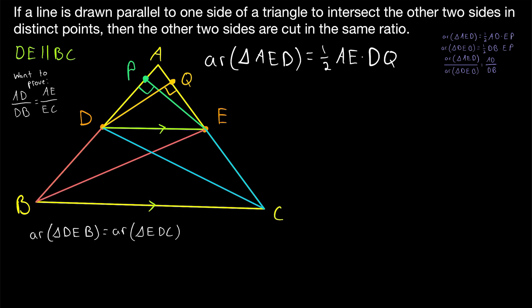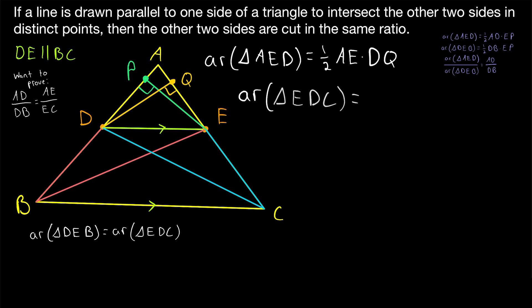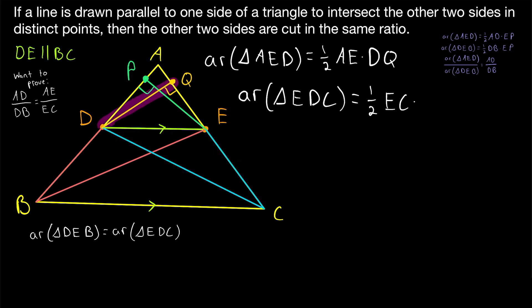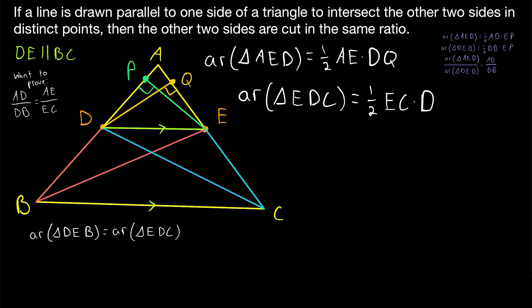Now we consider triangle EDC. We let EC be its base. Just as EP was the shared height when DB was the base, here DQ is also the height of triangle EDC — it is the perpendicular distance from D to the line containing EC. So the area of triangle EDC is one-half times EC times DQ.